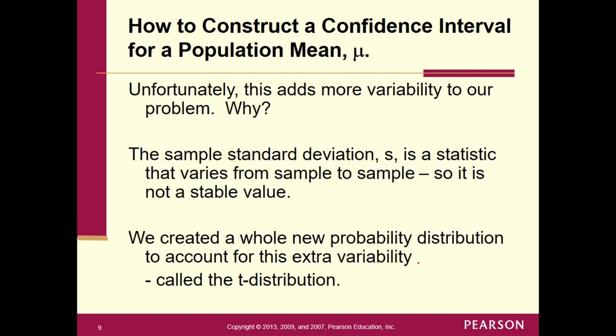Unfortunately, this adds more variability to our problem. Why? Because s is a statistic, and statistics vary from sample to sample — it's not a stable value. One sample might produce a standard deviation s of 3.2, another 3.35, another 3.46. So s is a slightly moving target. Because of this extra variability, we have to create a whole new probability distribution to account for it, and we call this the t-distribution.